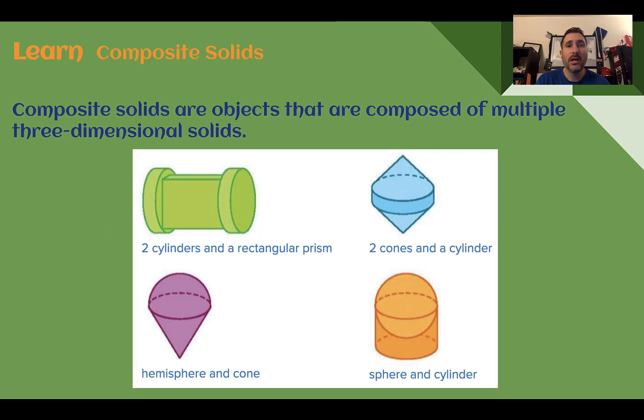Let's learn. Composite solids. Composite solids are objects that are composed of multiple three-dimensional solids. We can see there are four examples here. So this one here has some cylinders at the end and a prism in the middle. We have another one that has a cylinder in the middle and on the top and the bottom has a cone. We have one that looks like an ice cream cone shape, a hemisphere and a cone. These ones are super common, trying to find the volume of an ice cream cone. And we have one here where it's a cylinder and a sphere, or really a hemisphere sitting on top.